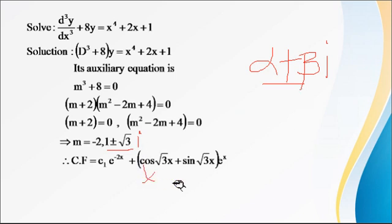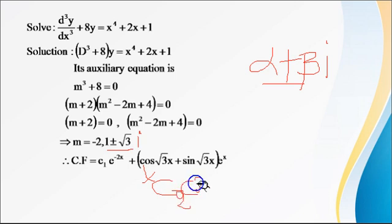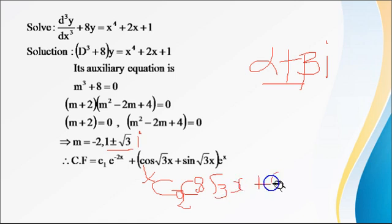The complementary function is: CF = c₁e^(−2x) + e^x (c₂ cos(√3 x) + c₃ sin(√3 x)).